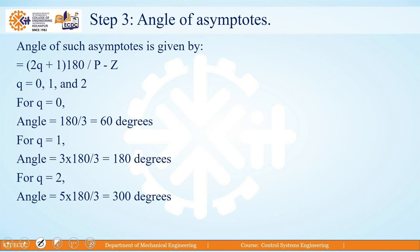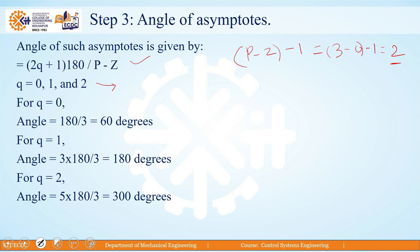In step number 3, the angle of asymptotes is given by the formula: (2Q+1)×180° divided by (P−Z), where Q ranges from 0 to P−Z−1. Since P=3 and Z=0, Q goes from 0 to 2. Substituting Q=0 gives 60°, Q=1 gives 180°, and Q=2 gives 300°. These are the three angles of asymptotes.